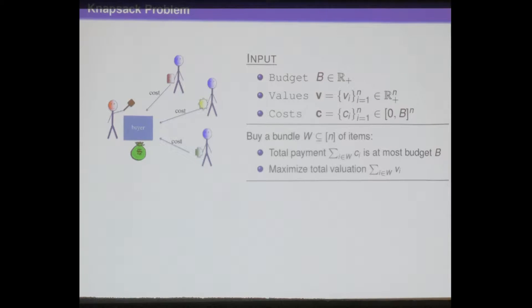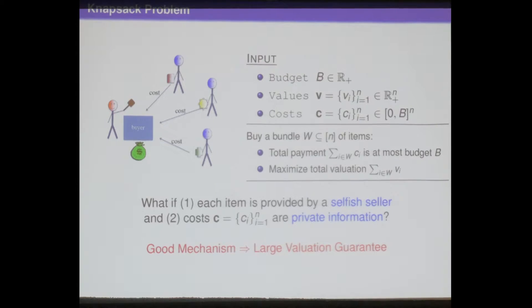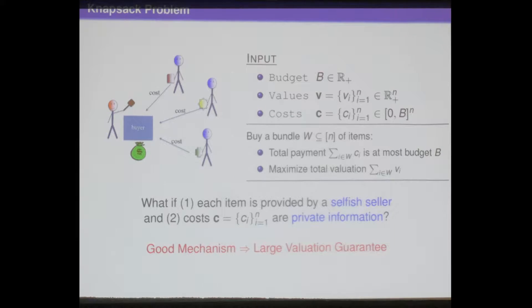However, in a very practical and typical scenario, each item is provided by a selfish seller and possibly the cost of the items are all private information. Under these assumptions, possibly the buyer cannot purchase a bundle as good as in the original idealized knapsack model, so he needs some good mechanism to guarantee a large enough valuation in any case.